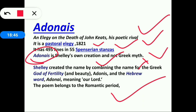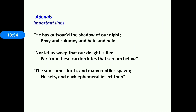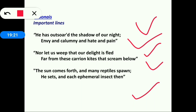The poem Adonais belongs to the Romantic period, as both John Keats and P.B. Shelley belong to that period. Important exam lines from Adonais: 'He has outsoared the shadow of our night; envy and calumny and hate and pain, nor let us weep that our delight is fled — far from these carrion kites that scream below; the sun comes forth and many reptiles spring, he sets and each ephemeral insect then is gone.'